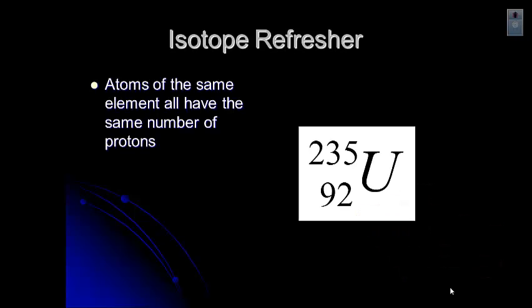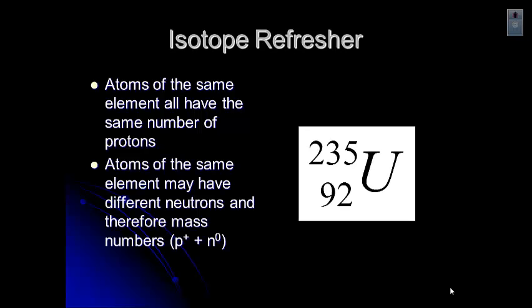And we want to remember that all atoms of the same element have the same number of protons. So that's how we know which element is which. And atoms of the same element can have different numbers of neutrons, and therefore different mass numbers. So you probably remember that from way back at the beginning. We call those atoms with different numbers of neutrons and different mass numbers isotopes. You can also remember that we call atoms with different numbers of electrons ions.